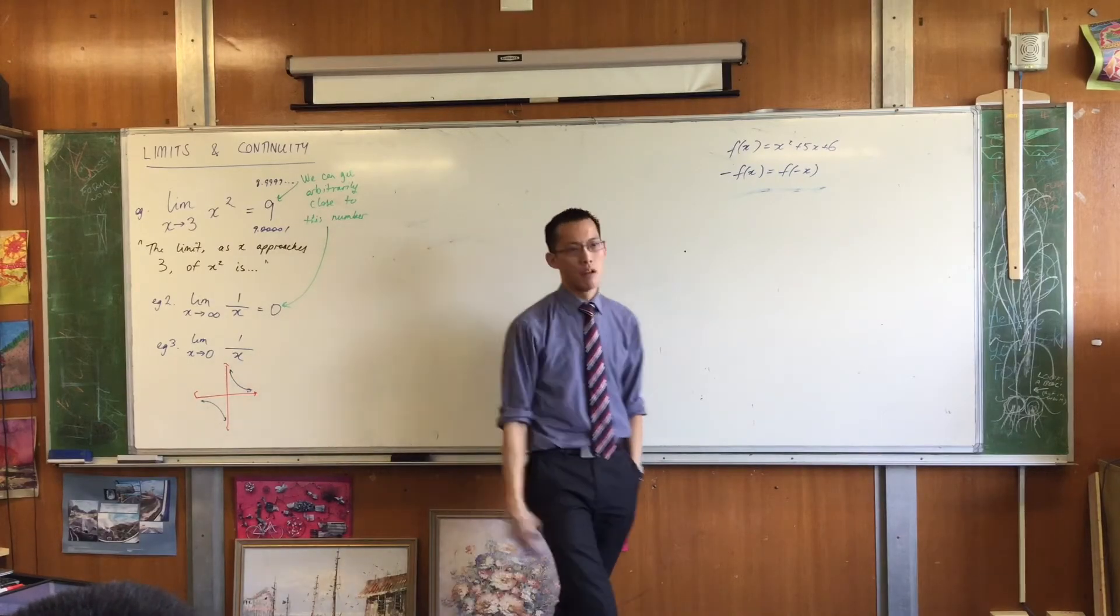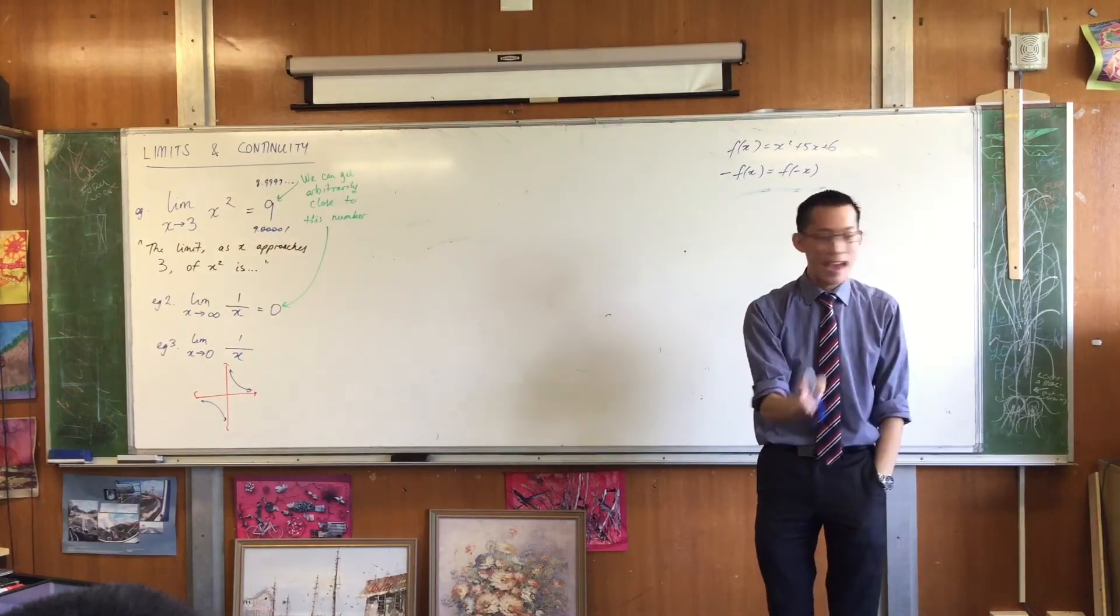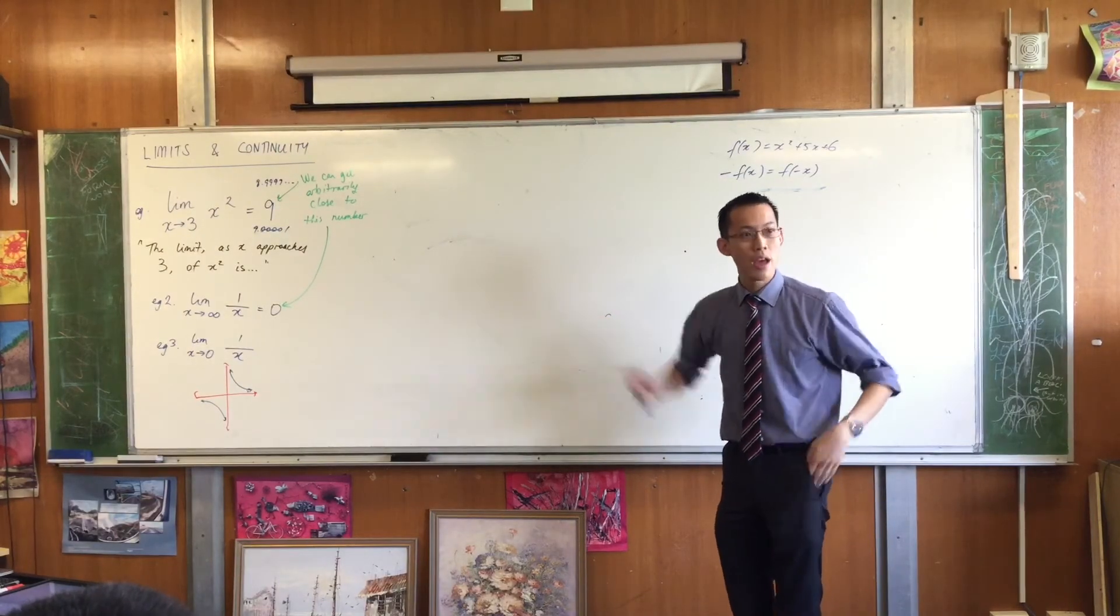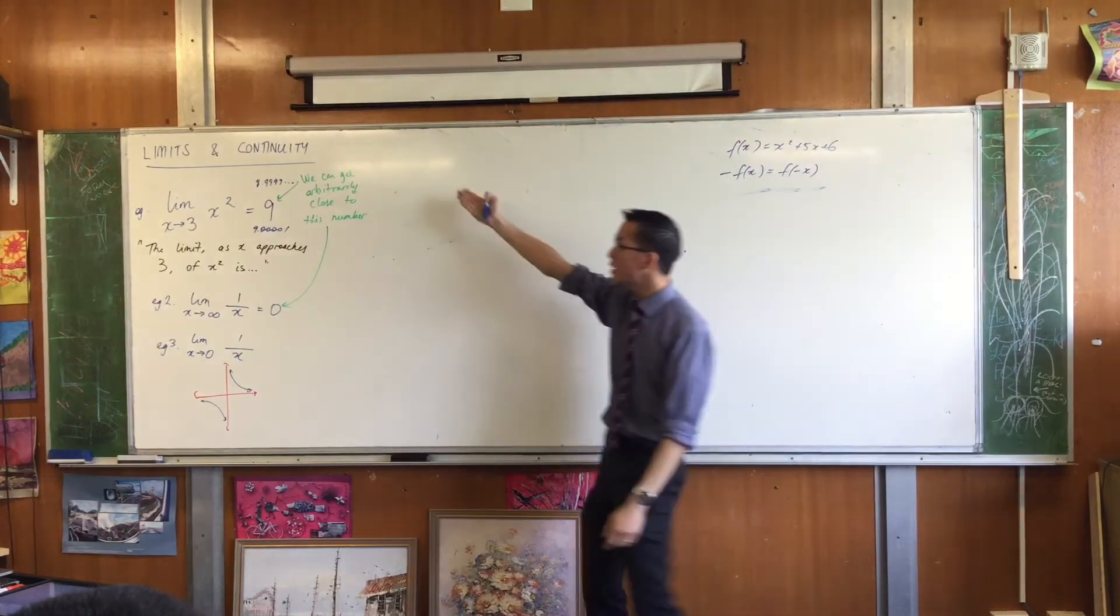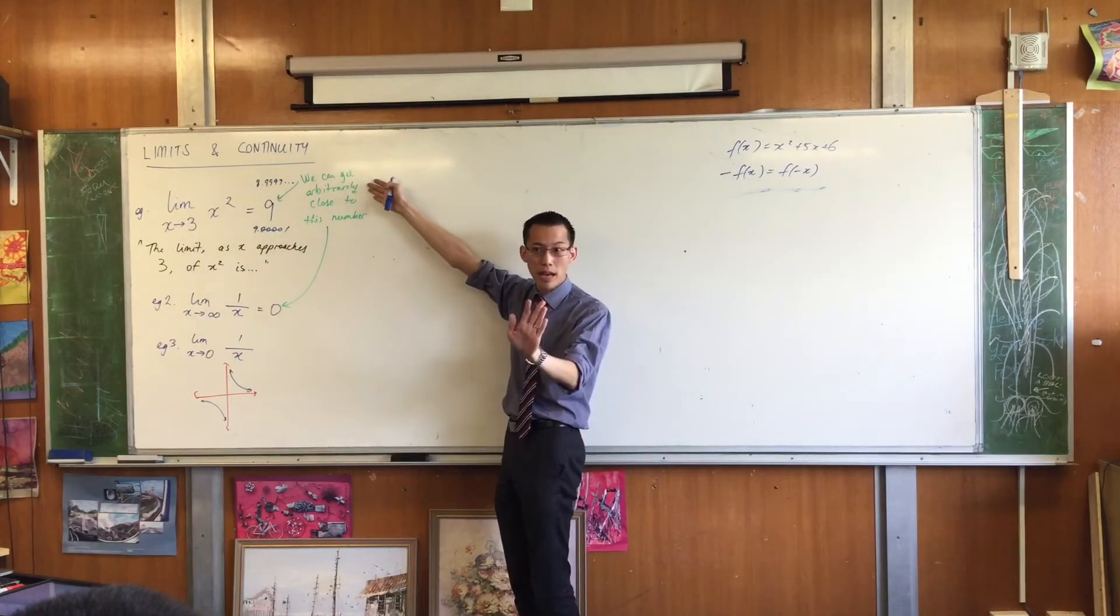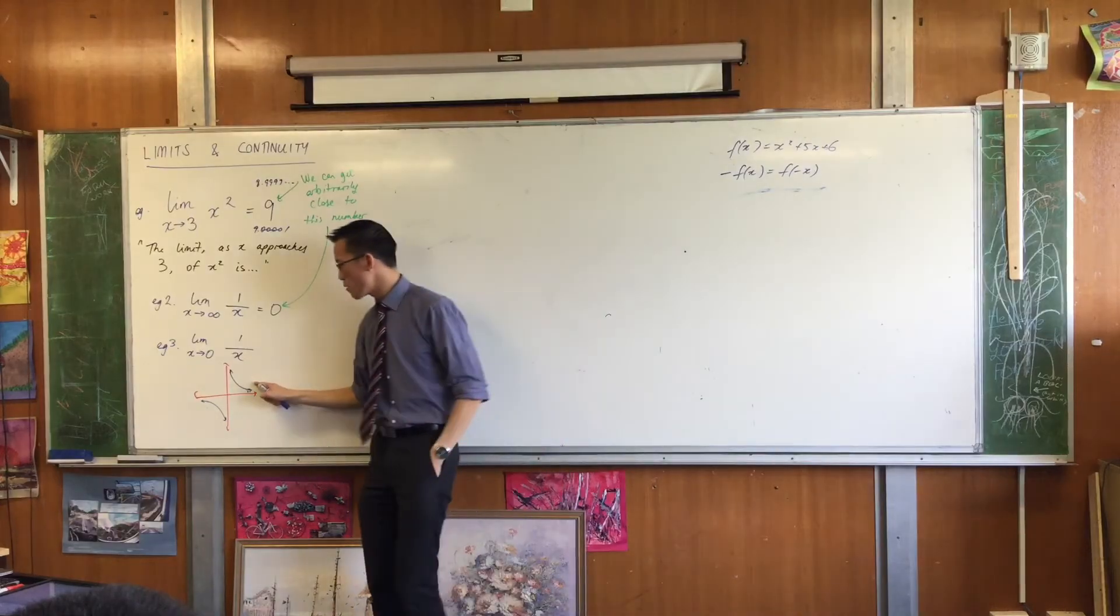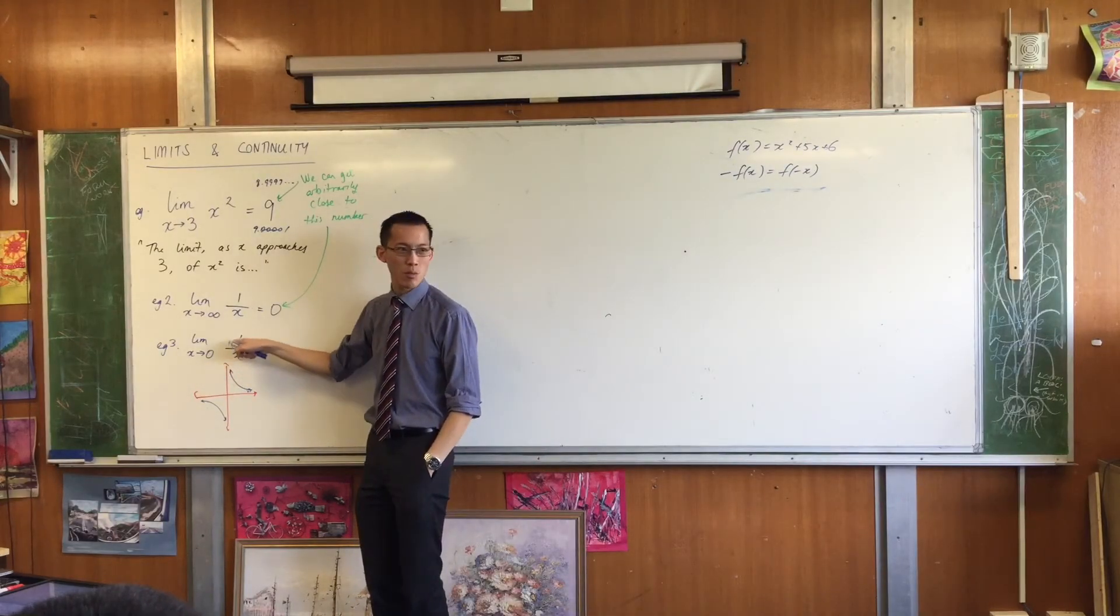Give me a number, a million, a billion, a Google, anything you like. I can give you an x value that will get to that, 1 over x will get up to there. So I can get arbitrarily close. I can get as big as you like. That's what happens when you put in 0.0001 or whatever.